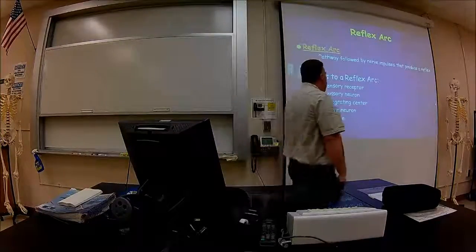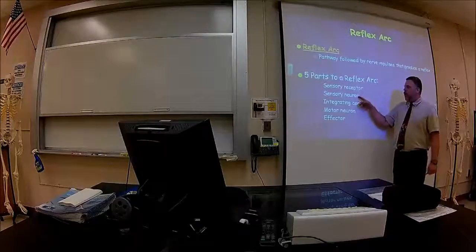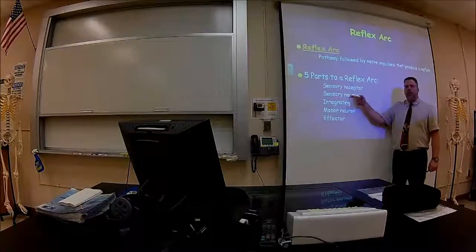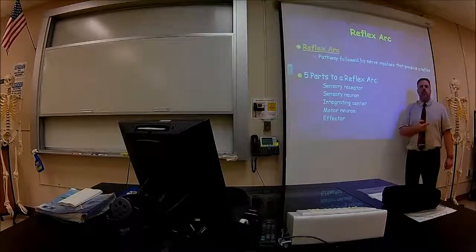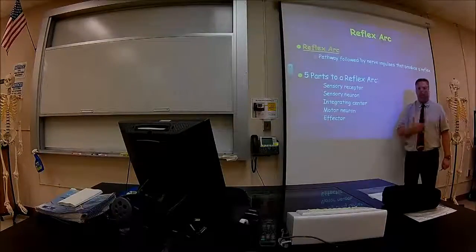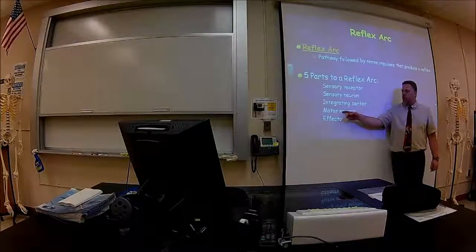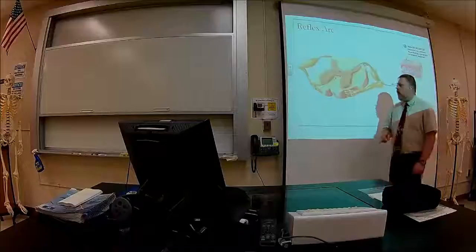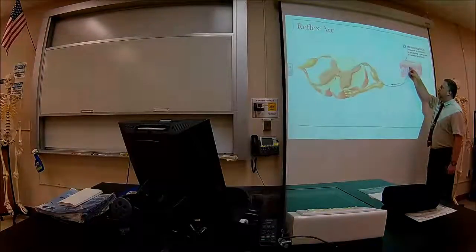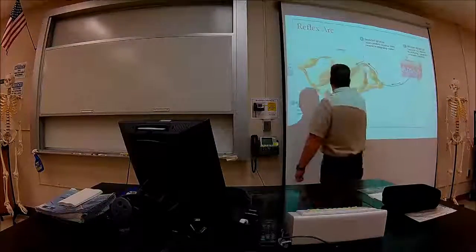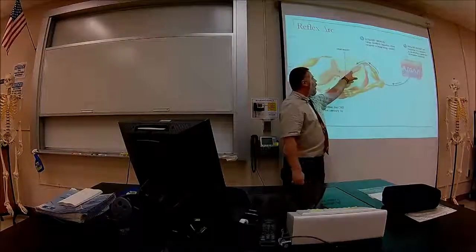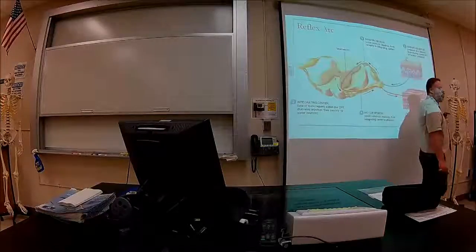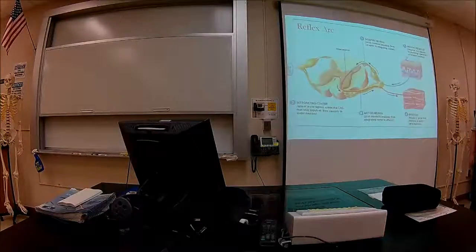A reflex arc — we have parts of it going on here. Sensory receptor, sensory neuron, the integrator. Something's going to touch something out there on the knee, say. The sensory neuron is then going to send the information from the receptor to the integrating center, which is going to be the central nervous system — in our case, the spinal cord. It's then going to synapse with a motor neuron in the spinal cord and send it out to whatever organ it's going to go to, to contract the effector.